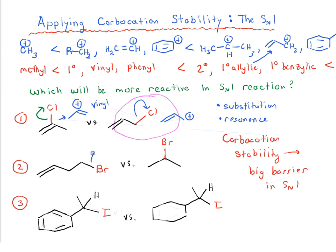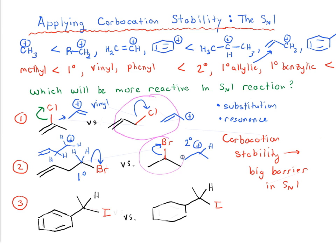In the next example, we have two substrates. On the far left, we have a primary carbon and we lose the bromine — that gives us a primary carbocation. Some students might see the double bond and think this is resonance stabilized, but it's not. There's a CH2 between the double bond and the carbocation, so the double bond can't access the carbocation to stabilize it — it's just a primary carbocation. If we lose the bromide from the other substrate, we obtain a secondary carbocation, which is more stable than primary, so that one is more reactive.